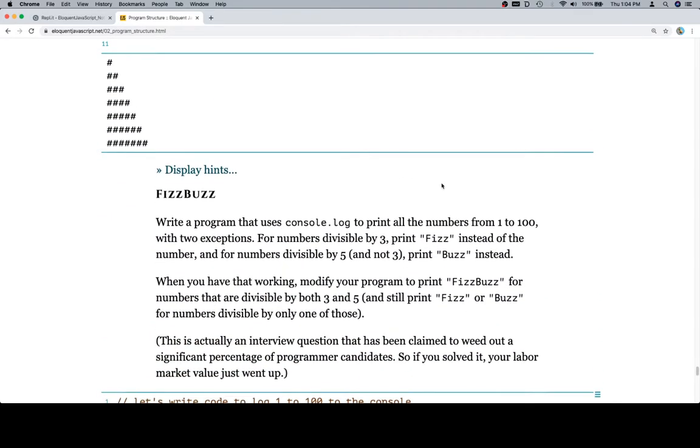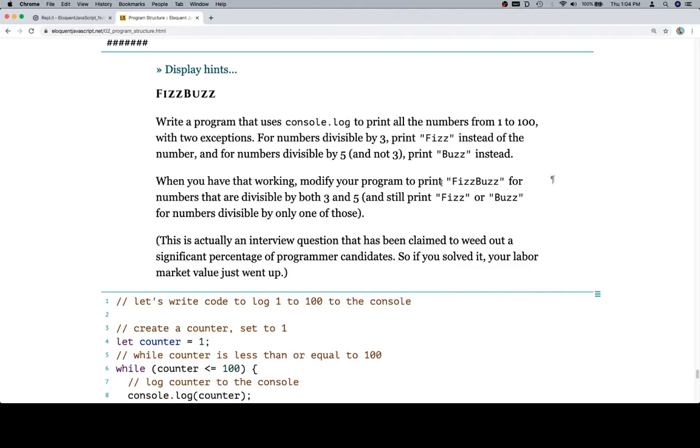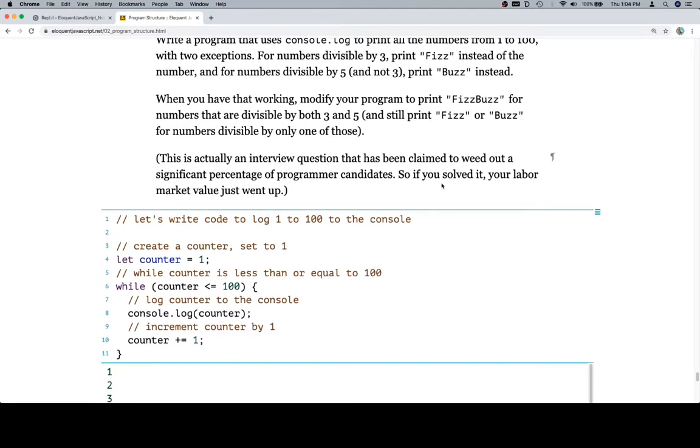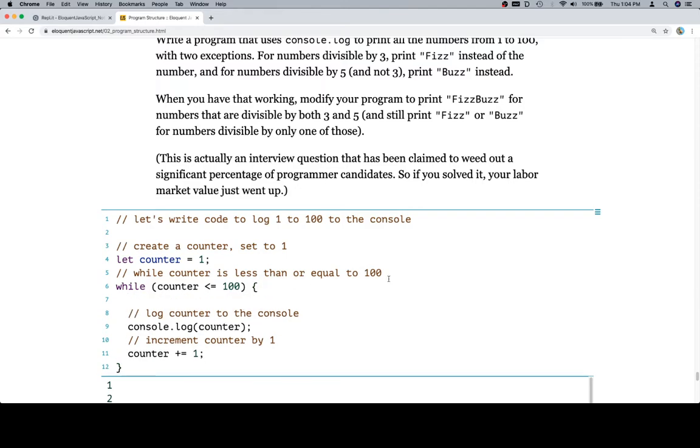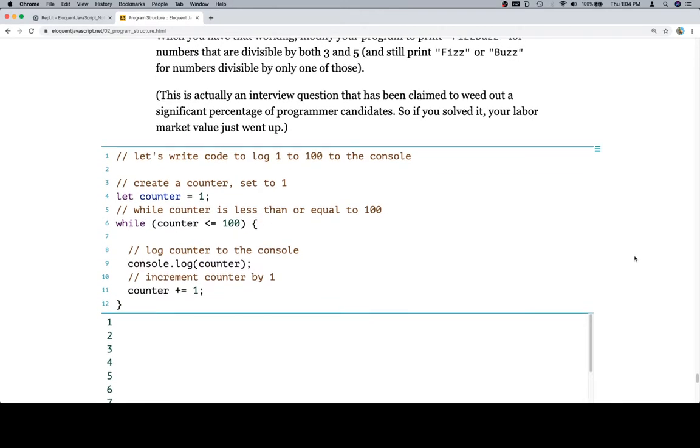Now it says that they want us to first start by trying to print out numbers that are divisible by 3. Rather than print out the number, we're going to print out Fizz. So we need to make a slight adjustment to our pseudocode first. And I would always suggest this. Whenever you have a situation where you're returning to code and you're trying to change it, change the pseudocode first.